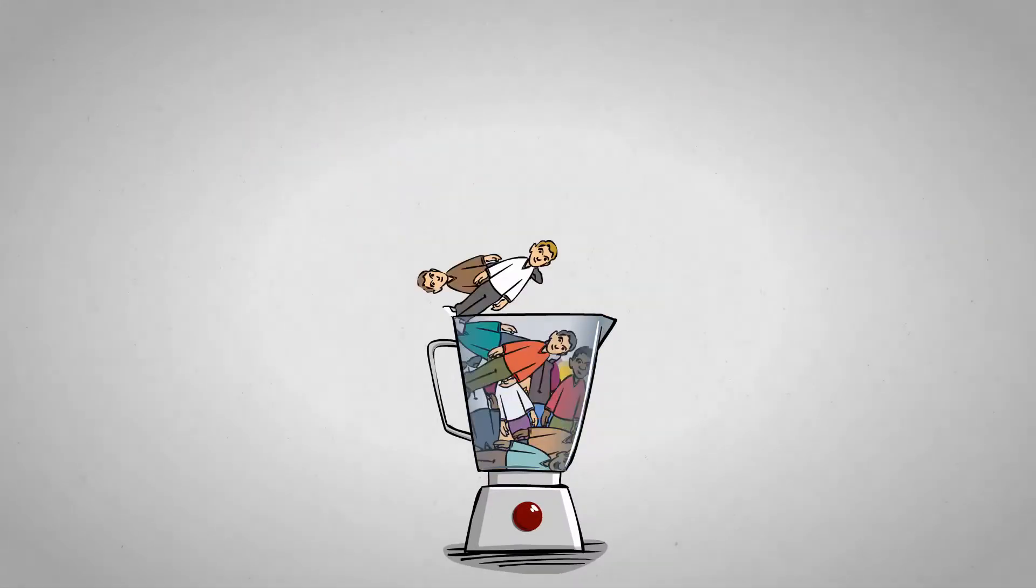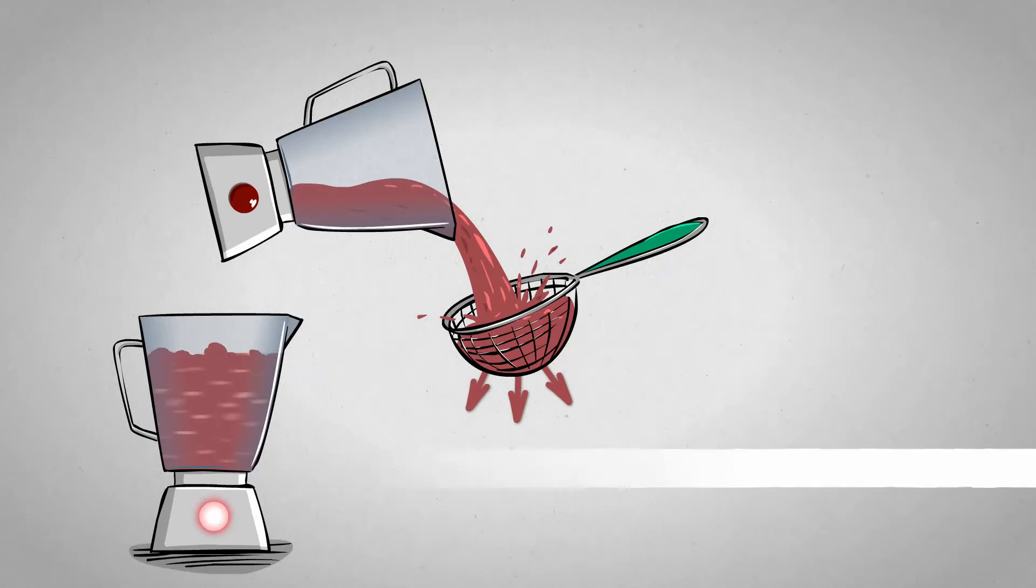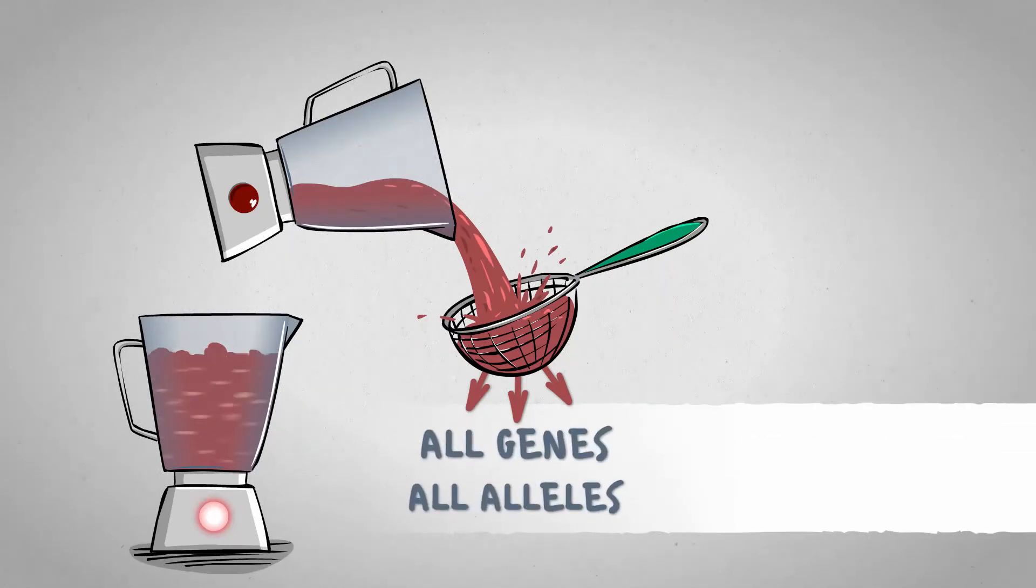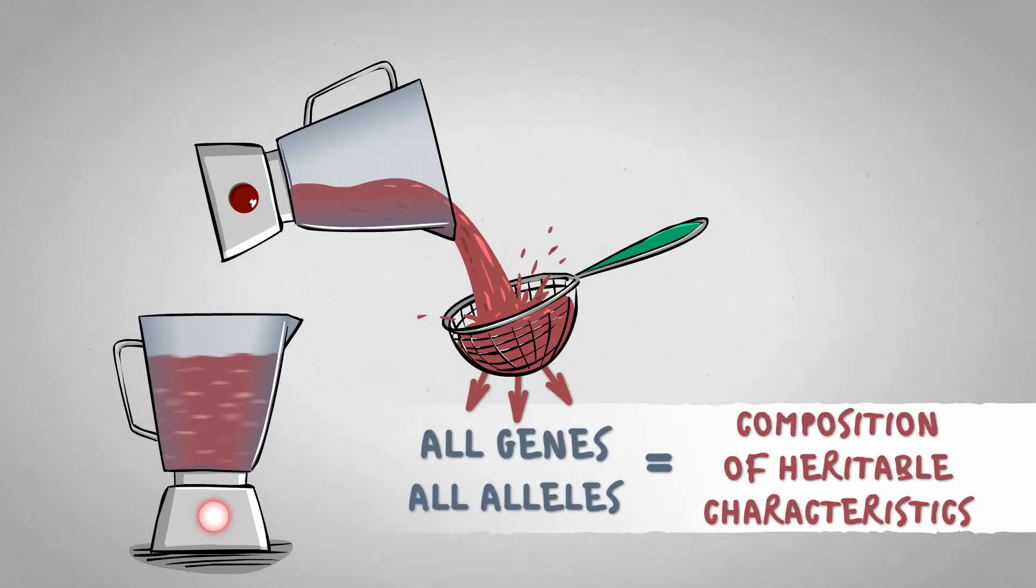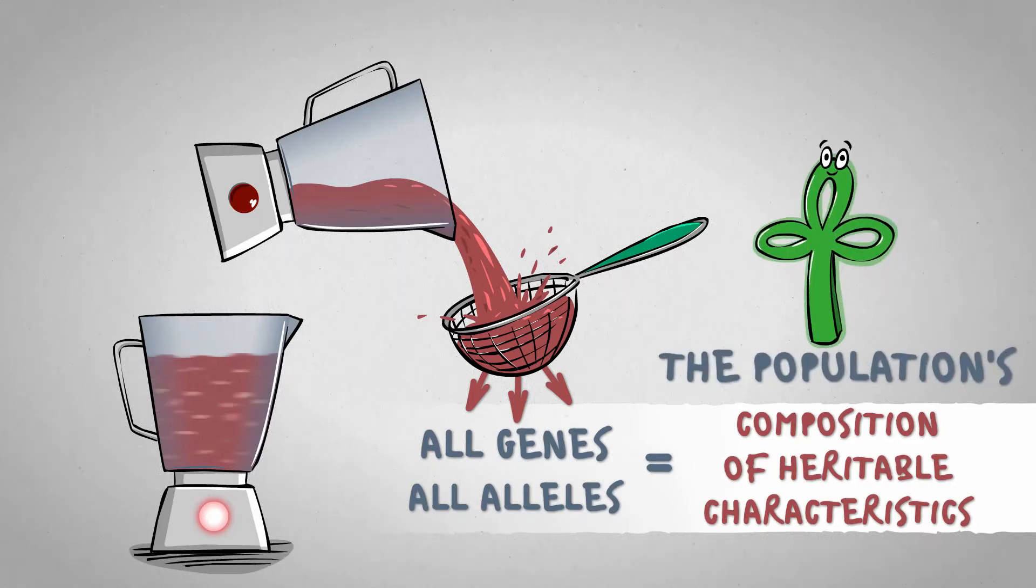If we put the population in a blender, then filter and count all the genes and their alleles, we get the composition of the heritable characteristics of the population.